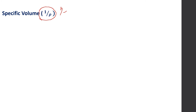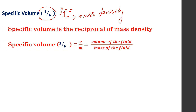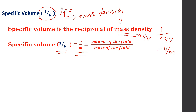The next property is specific volume, represented by 1/ρ. Specific volume is the reciprocal of mass density. Since mass density is mass divided by volume, taking the reciprocal gives volume divided by mass — that is, volume of the fluid by mass of the fluid. The SI unit for specific volume is meter cube per kilogram.